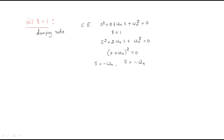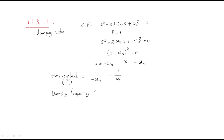Both poles are equal: s = −ωₙ. From these poles we can find the time constant, which is 1 divided by the magnitude of the real part, giving τ = 1/ωₙ. There is no damping frequency (ωd = 0), which means there are no oscillations in this system.